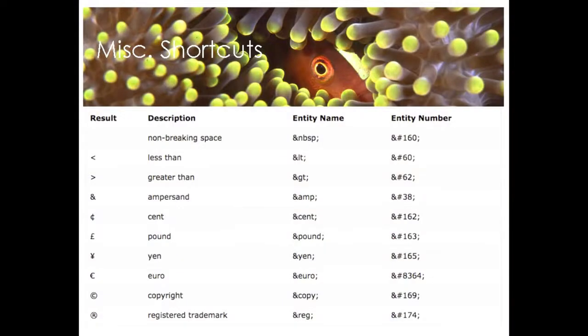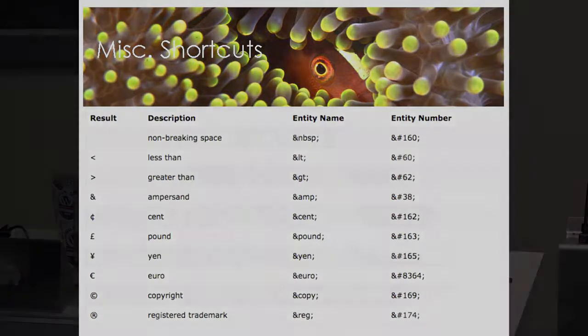Some other miscellaneous shortcuts — the link to all these slides is coming. To use these shortcuts, you have to be in your text editor. You can create a non-breaking space using the ampersand, NBSP, semicolon. You can use the less than and greater than symbols. And for things you can't find on your keyboard quickly — like the cent sign, pound, euro, etc. — there's an entity name and number for each one to use in WordPress.